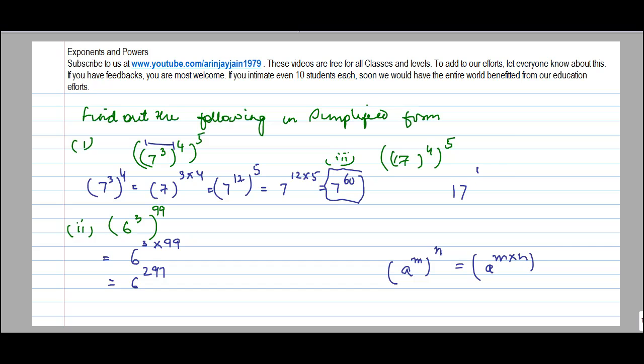Here also 17 to the power 4 into 5. This is equal to m. This is equal to n. So a to the power m to the power n is equal to a to the power m times n. So what do we do? We basically find out what is the value of m, what is the value of n, and then find out the products.